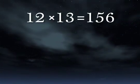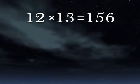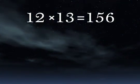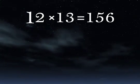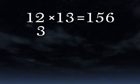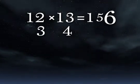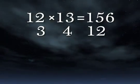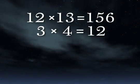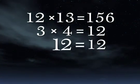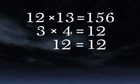12 times 13 equals 156. Let's check our work through digit sums. 1 plus 2 is 3. 1 plus 3 is 4. 1 plus 5 plus 6 is 12. So now we have 3 times 4 equals 12. That's 12 equals 12. And then digit summing finally, 3 equals 3.